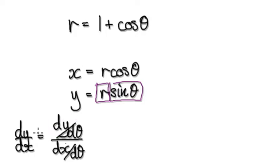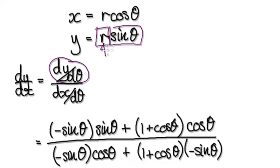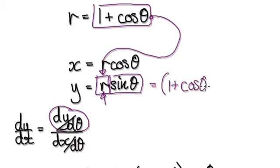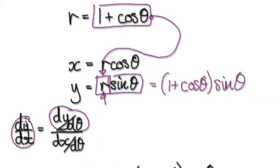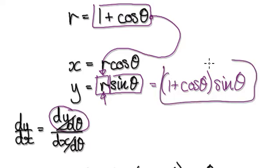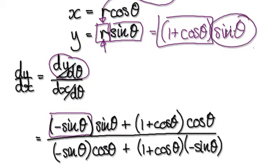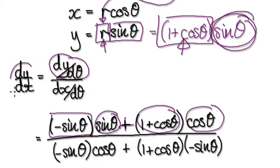Using the product rule to find dy by dθ: r is this thing here, which is 1 plus cos theta, and then you've got your sin theta. Applying the product rule — differentiate the first part, which gives minus sin theta, and leave the second alone. Then plus: leave the first alone and differentiate the second. That gives you dy by dθ.